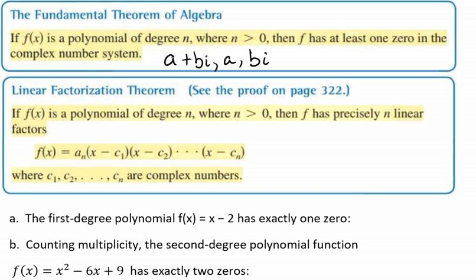Using the Fundamental Theorem of Algebra and the equivalence of zeros and factors, you can obtain what we call the Linear Factorization Theorem. This says that if f(x) is a polynomial of degree n, where n is larger than 0, then f has precisely n linear factors.